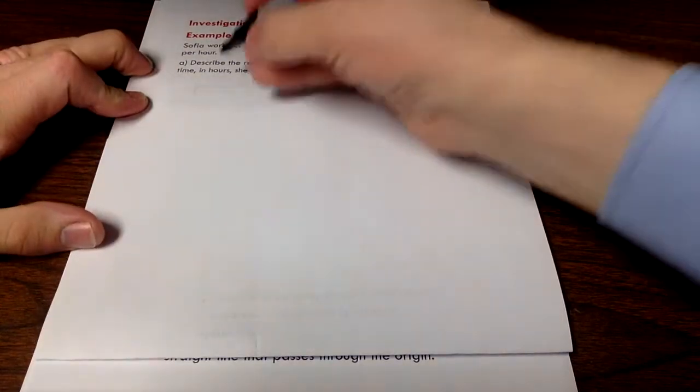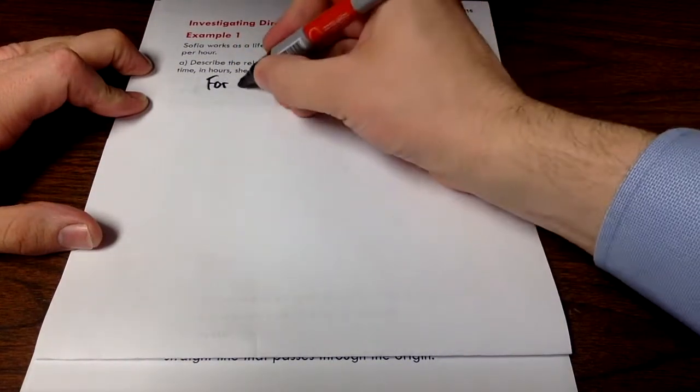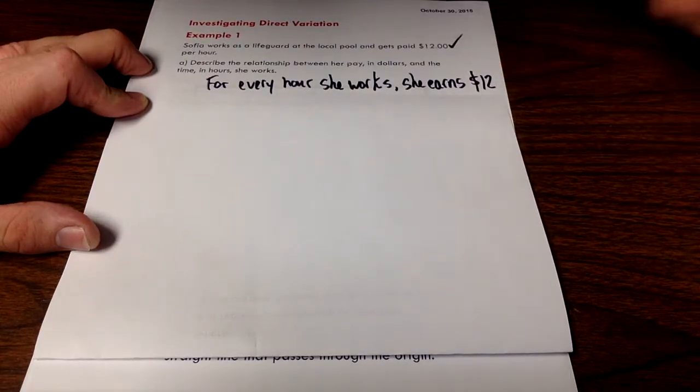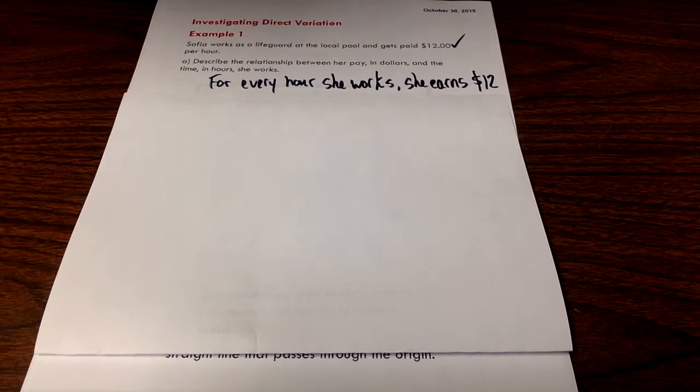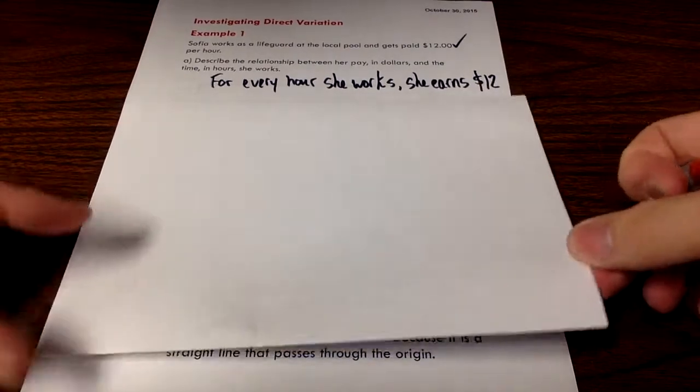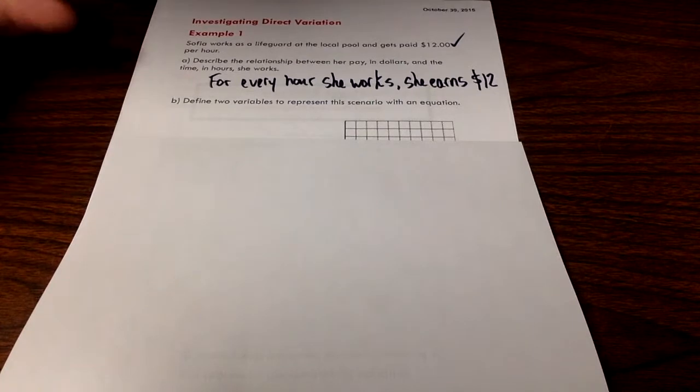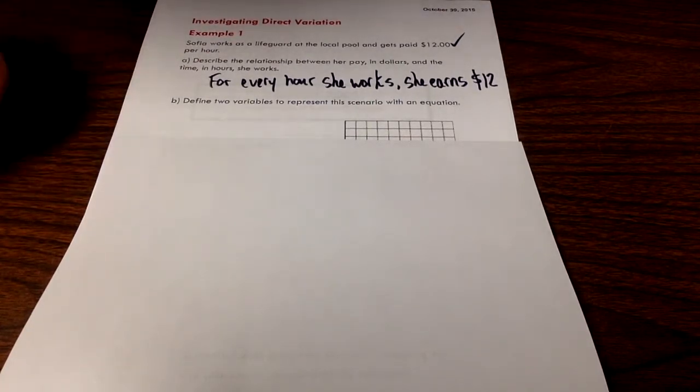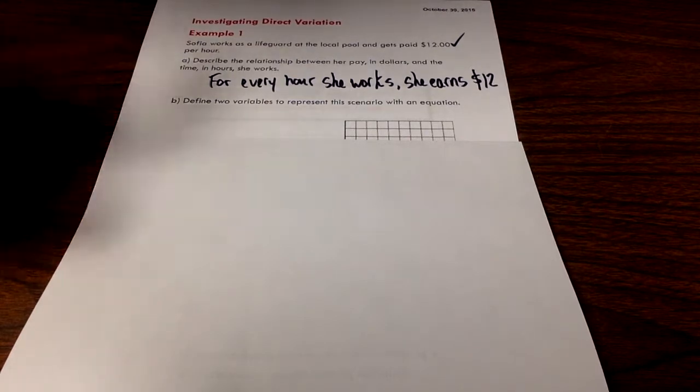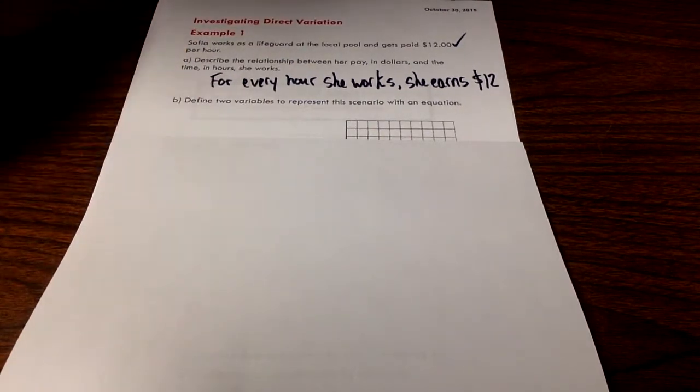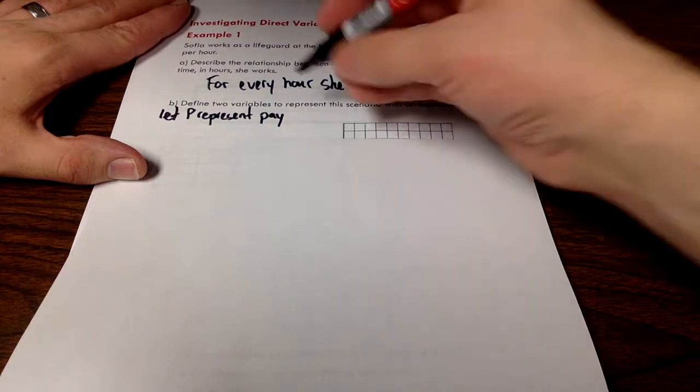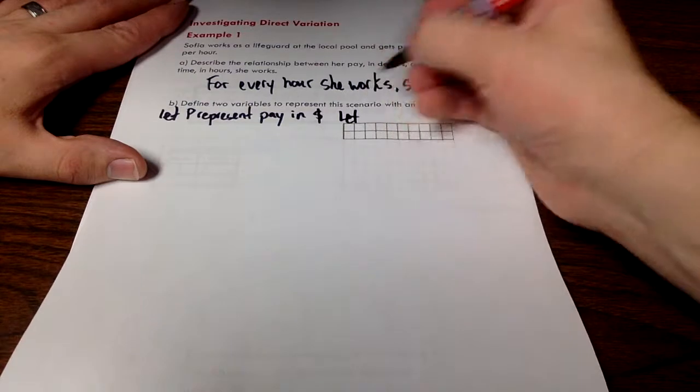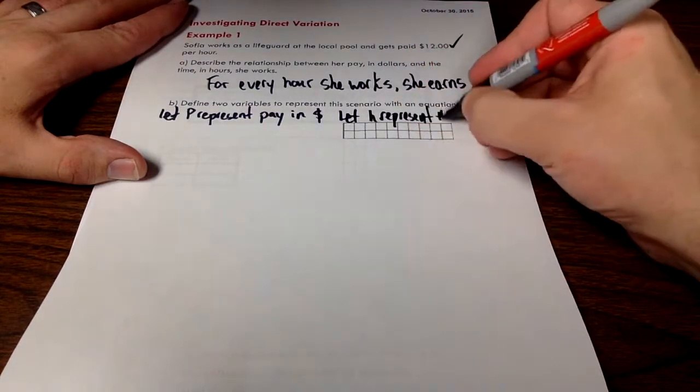We can do this just using words. We can see that for every hour that she works, she earns $12. That's pretty intuitive. But our goal here is to model this situation using some algebra. I'm asking you to define two variables to represent this scenario and then form an equation using these variables. I've got money and I've got time. I'm going to say let P represent pay in dollars, and let H represent the number of hours worked.